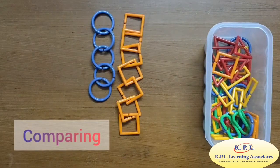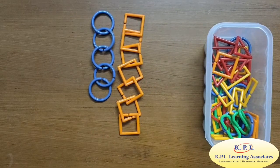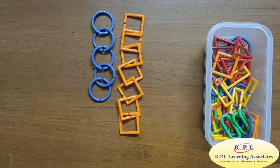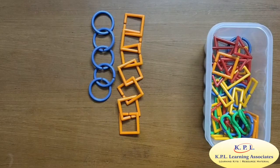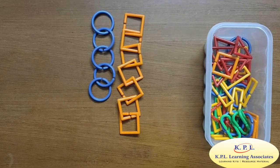Comparing. Here I have two chains of five circles and seven squares. Can you please tell me which chain is longer? This chain looks longer. And by how many clips? 1, 2. 2 clips.